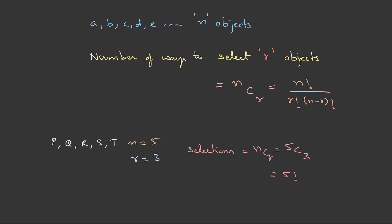That is 5 factorial by 3 factorial into 2 factorial. 5 factorial is 120. 3 factorial is 6 and 2 factorial is 2. This is 10.